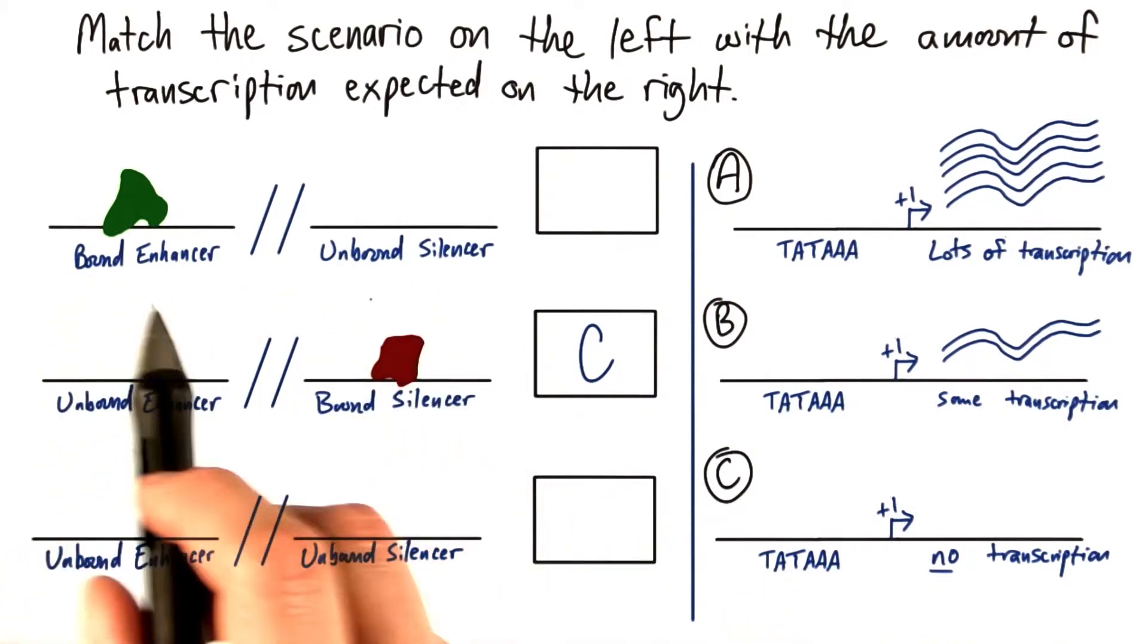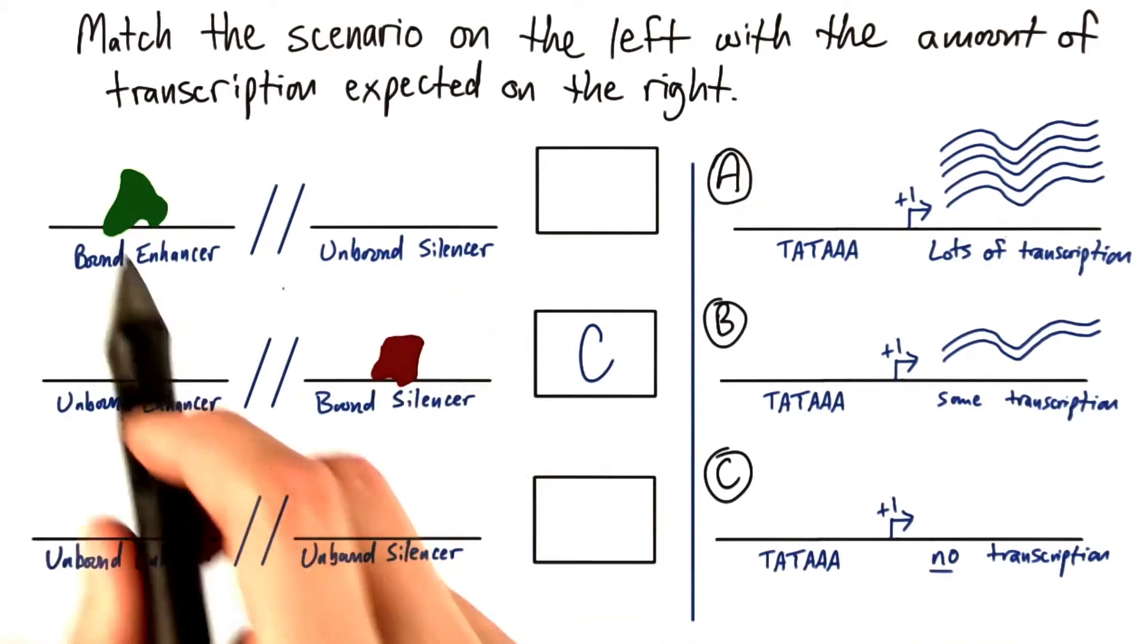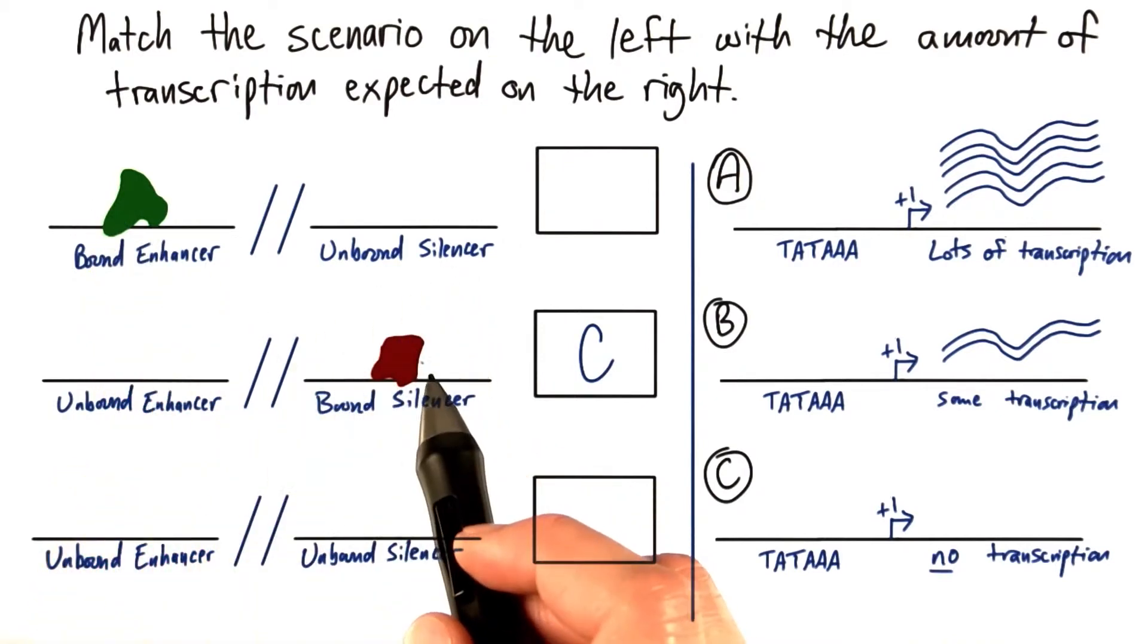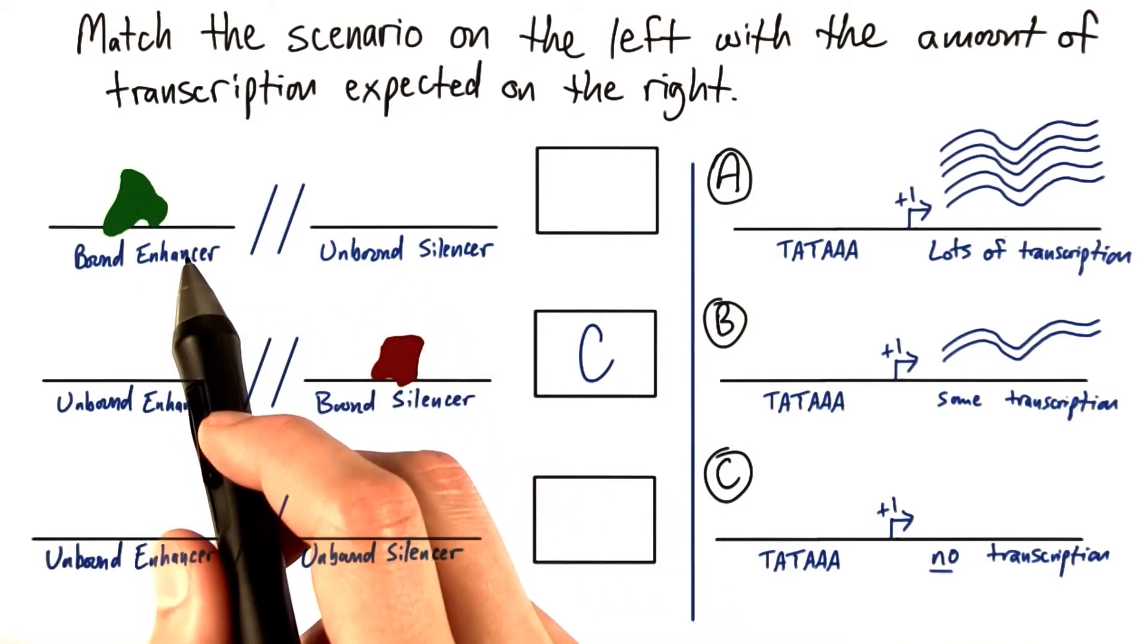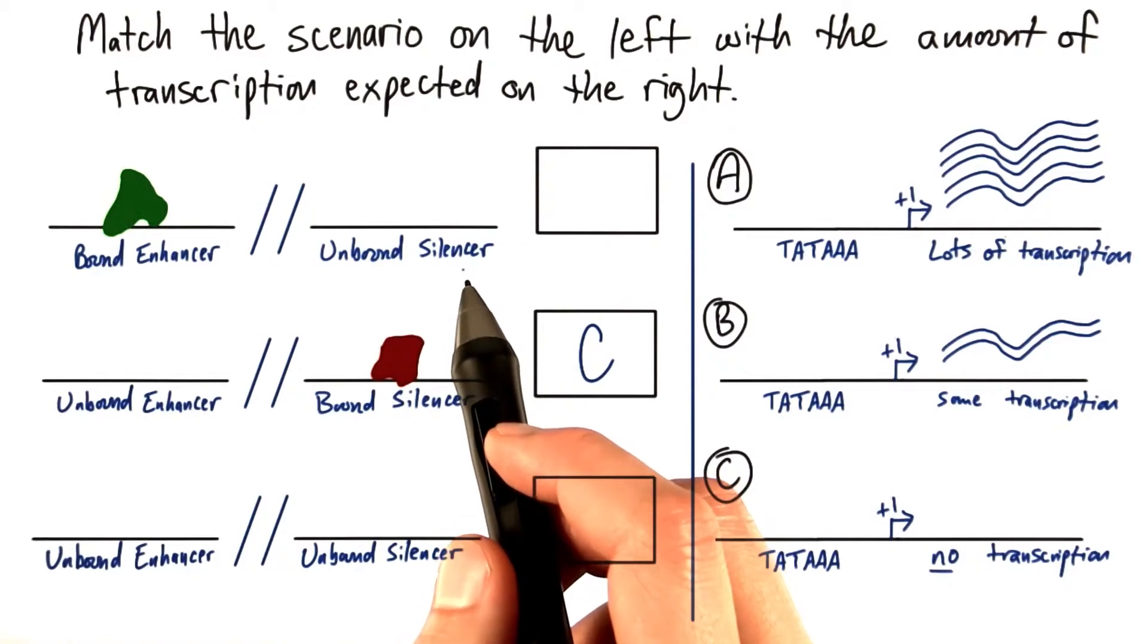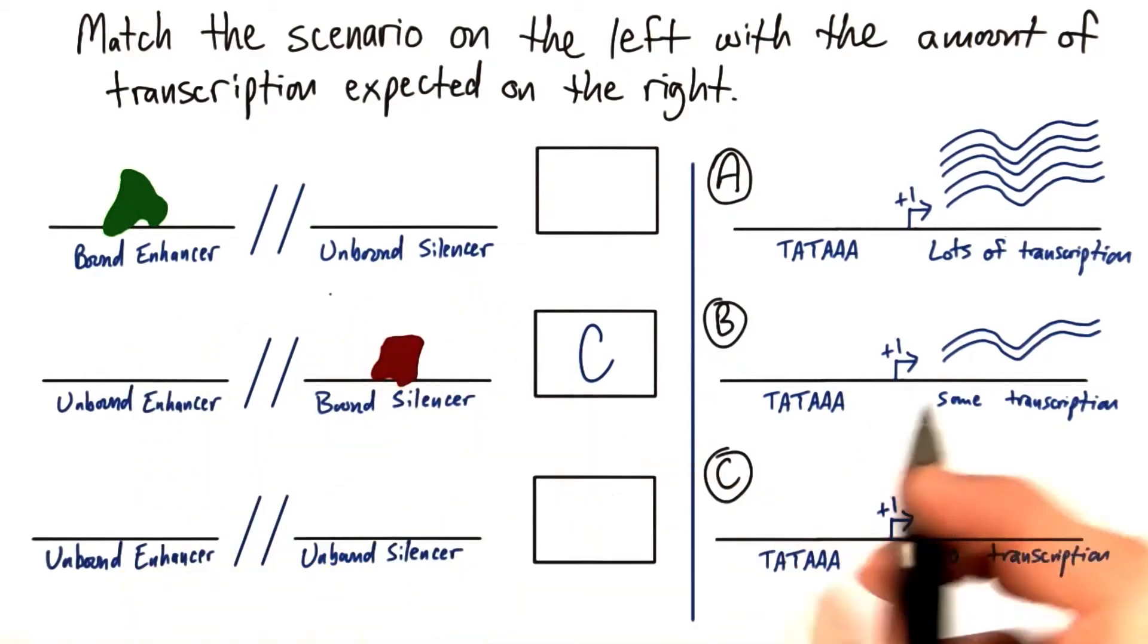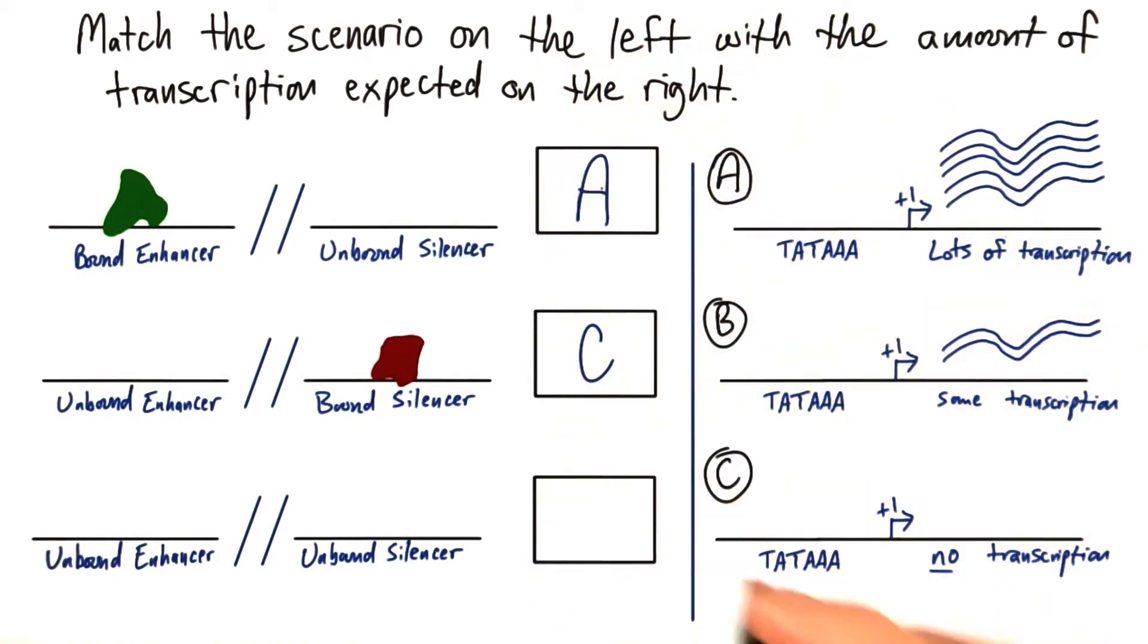The scenario above it, however, we have the enhancer bound and the silencer is unbound. Remember, the proteins mitigate the effects of what these non-coding regions can do. So a bound enhancer is going to enhance transcription. An unbound silencer won't be able to silence transcription. And so this is going to be our most active transcription here. Lots of transcription, so the answer to this one is A.